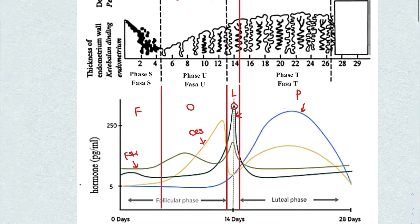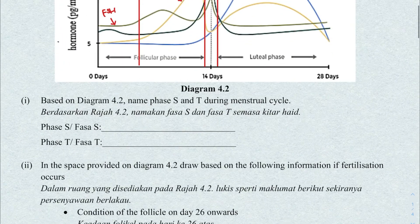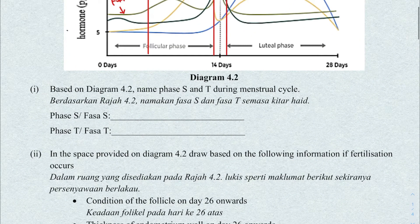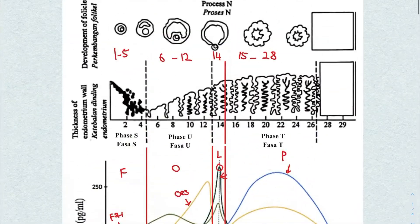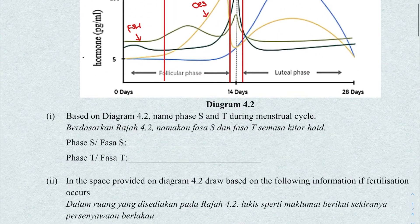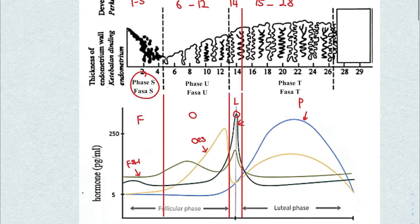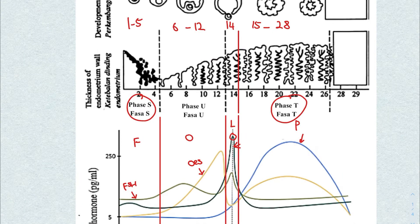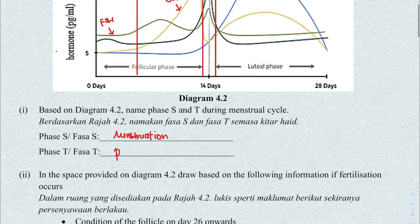Now we've got the phases and we've got the hormones — we are basically set to go for questions. Based on the diagram, name phases S and T during the menstrual cycle. Phase S is the first five days — easy, that's menstruation. Phase T is over here, that's the last phase — the pre-menstruation stage.